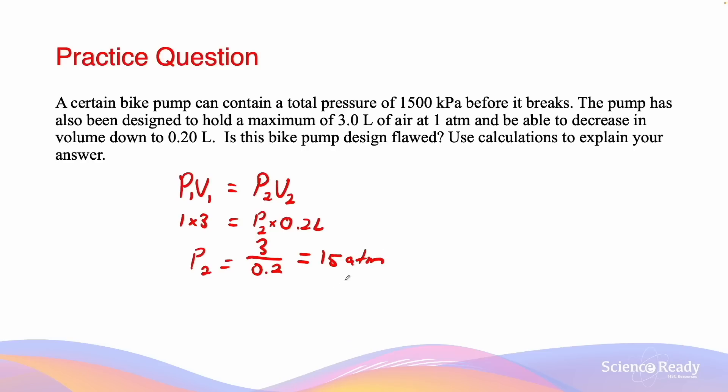To convert this into kilopascals, we need to multiply it by 101.325. So 1 atm equals 101.325 kPa, and so 15 atm equals 1519 kilopascals.